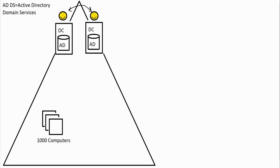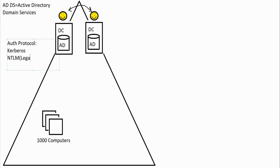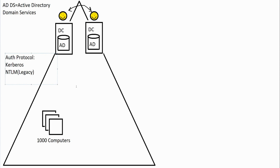The authentication protocol used is Kerberos. A protocol is essentially like a language. There was also an older protocol called NTLM — New Technology LAN Manager — which was for legacy machines prior to the year 2000. Active Directory also uses a language called LDAP, Lightweight Directory Access Protocol, which is the Directory Service Language.